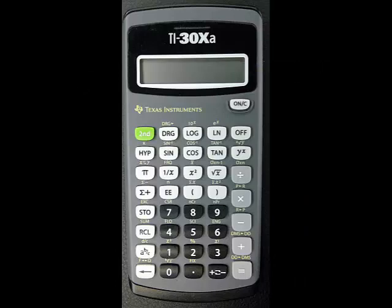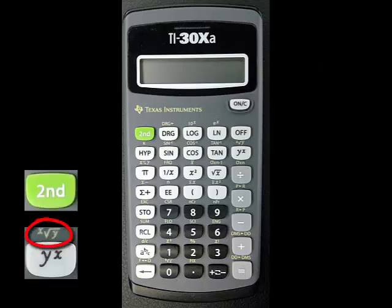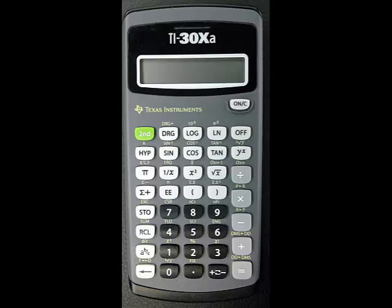Like the power, the root can be any number besides 2 and 3 as well. The second function of the power button is the root function. To find the root of a number, you enter that number, then press the root function, then enter the root that is desired, followed by the equals button, since the general root function is a binary function.